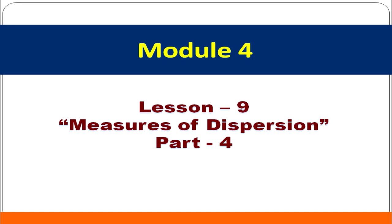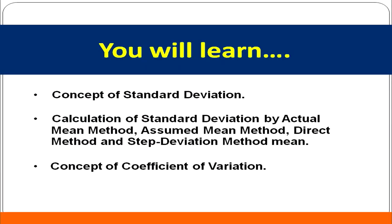Welcome learners, I am Divyanath. Today we are going to discuss about module 4, lesson 9, Measures of Dispersion, part 4. In this module we are going to discuss about the concept of standard deviation, calculation of standard deviation by actual mean method, assumed mean method, direct method, and step deviation method. Then we are going to discuss about the concept of coefficient of variation.